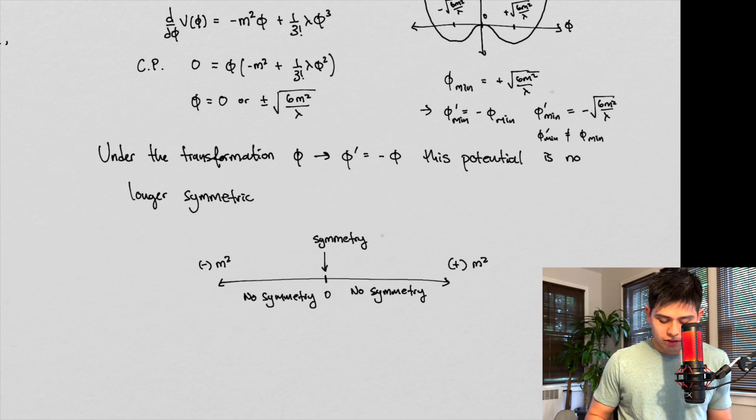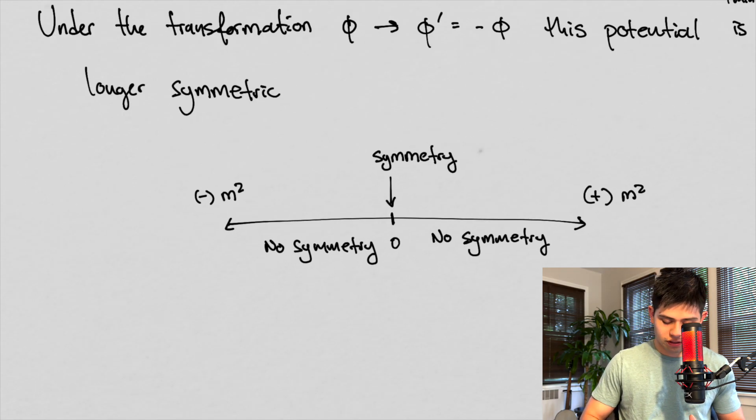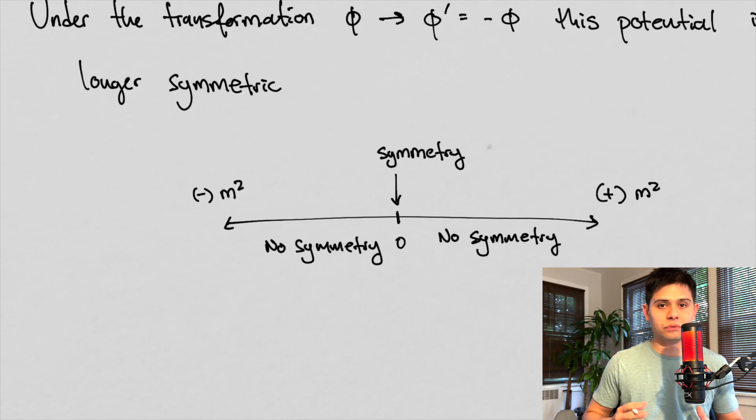So basically what's going on here is that there's a very fine line where there is symmetry. Right? So that fine line is where the mass equals zero. So, but as we know in the real world, mass is not equal to zero. My pen has a mass, you have a mass, I have a mass, the chair I'm sitting in has a mass.